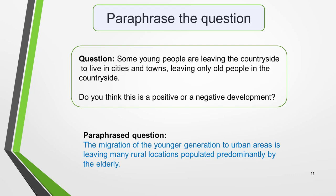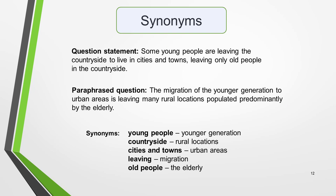Here's one way you could do it: 'The migration of the younger generation to urban areas is leaving many rural locations populated predominantly by the elderly.' Pause the video for a moment if you want to compare the two sentences. Note the use of synonyms for many of the key words — for example, 'young people' has been changed to 'younger generation', 'countryside' to 'rural locations', 'cities and towns' to 'urban areas', 'leaving' to 'migration', and 'old people' to 'the elderly'. You don't have to replace them all, but do so where possible without making the sentence sound awkward. It's fine to repeat one or two key words. Don't spend too much time trying to think of synonyms, or use ones that you're not 100% sure are correct.